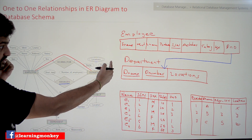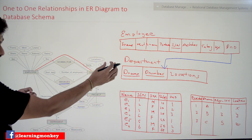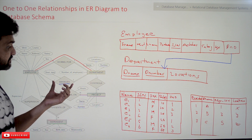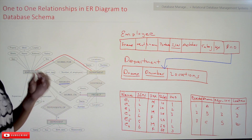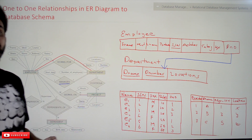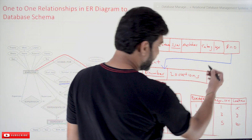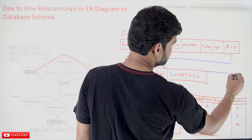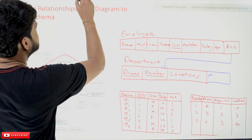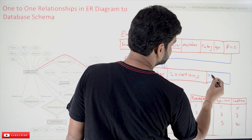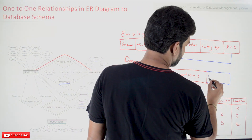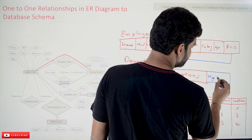The department manager attribute has been converted into the relationship 'manages.' Now in order to bring this relationship back into the database schema, what we have to do is convert this relationship into an attribute. A new attribute is getting added to our table, and we will take it as MGR_SSN, which stands for Manager SSN.